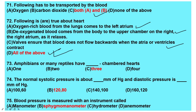Amphibians and many reptiles have a three-chambered heart. The normal systolic pressure is about 120 mm of mercury and diastolic pressure is 80 mm of mercury — normal blood pressure is 120/80 mm Hg.